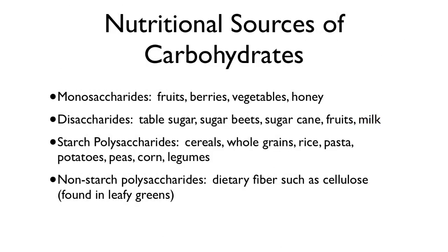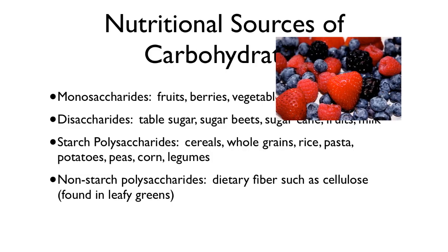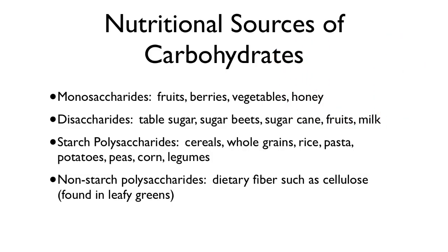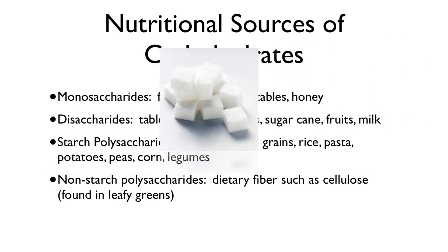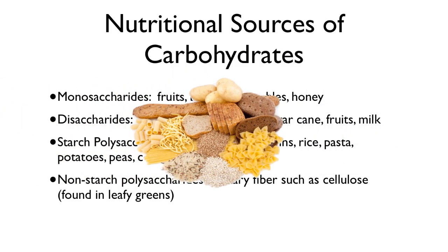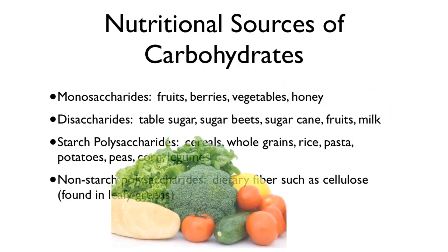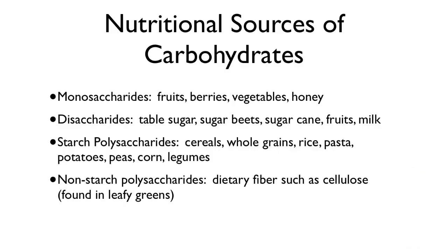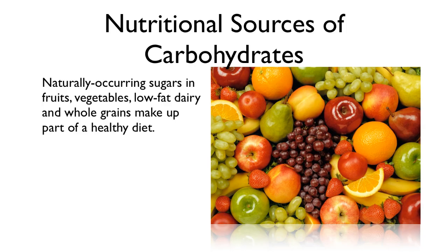Where we get carbohydrates in the diet, you probably know. Monosaccharides come from fruits, berries, and honey. Disaccharides: table sugar, cane sugar, milk, some other fruits. Starch polysaccharides: cereals, whole grains, and pasta. Non-starch polysaccharides: cellulose in leafy green cell walls — we don't get energy out of that. But as you know, dietary fiber is really important for the diet; it's good for your colon, and we get vitamins and minerals and all kinds of good stuff. The naturally occurring sugars are important and they're part of a healthy diet.